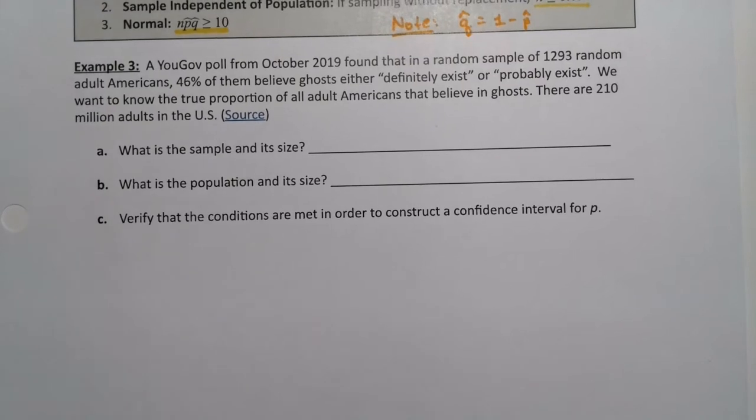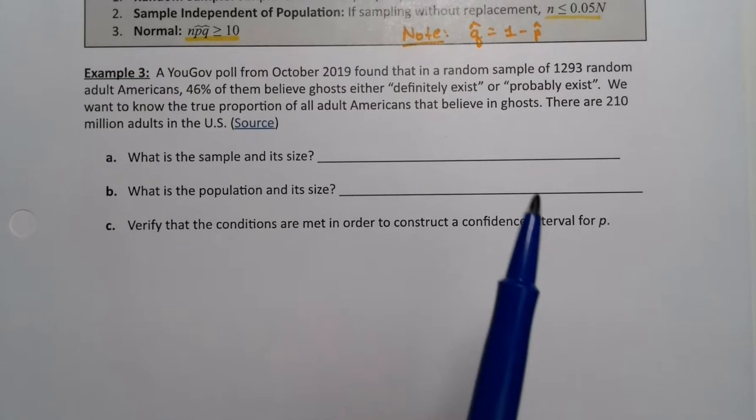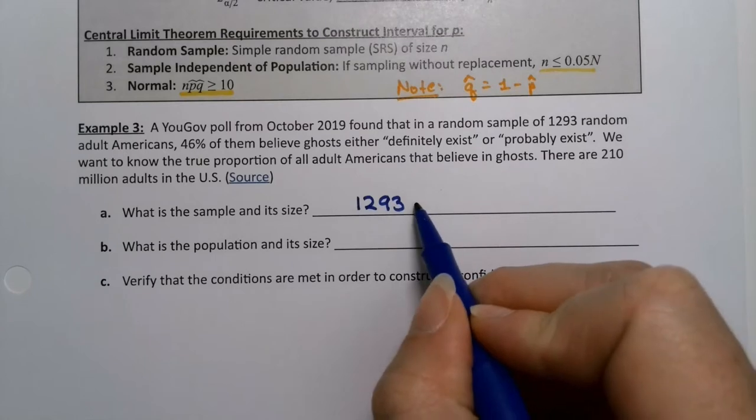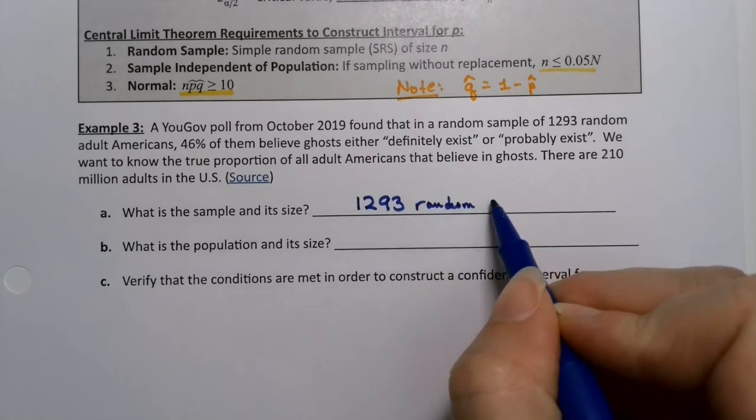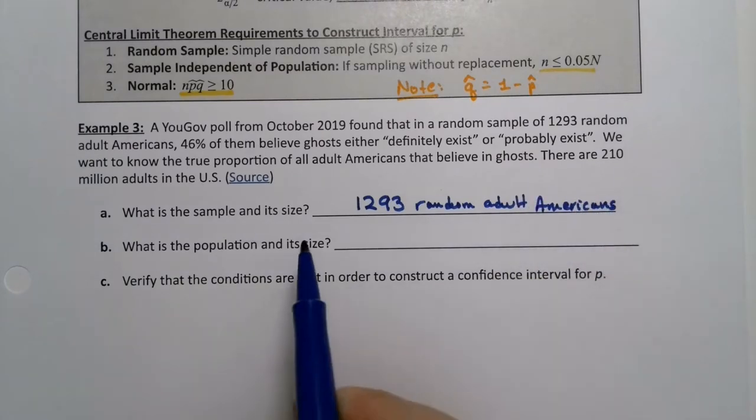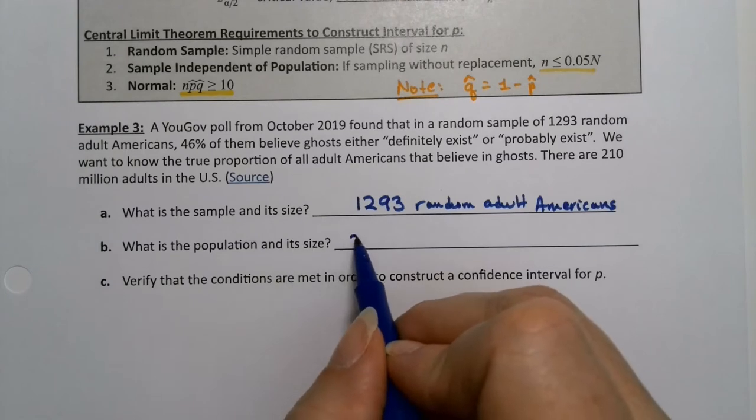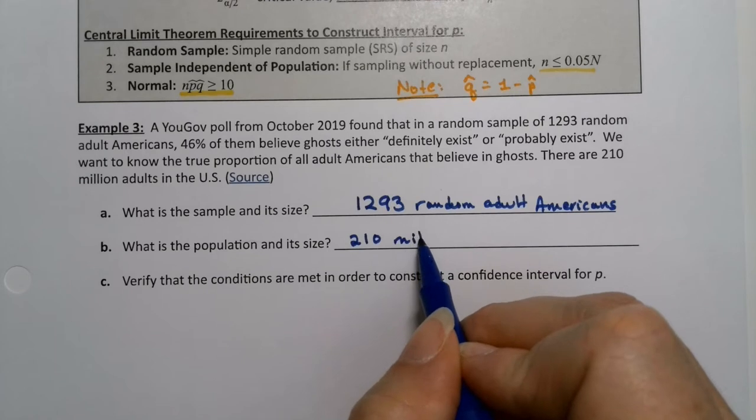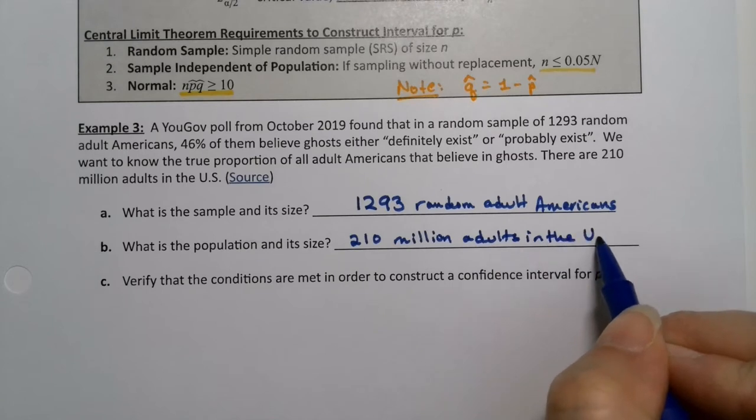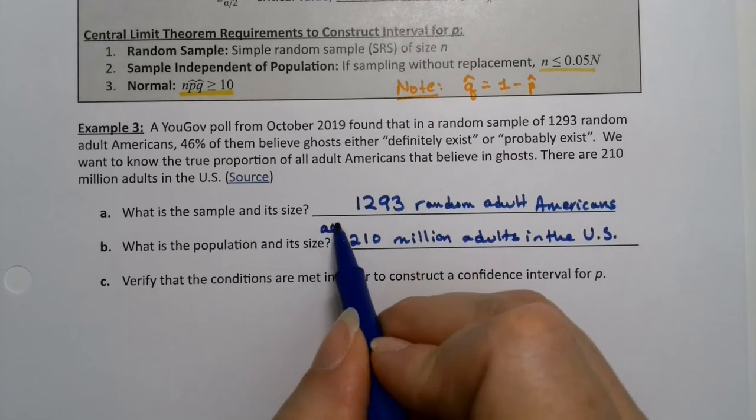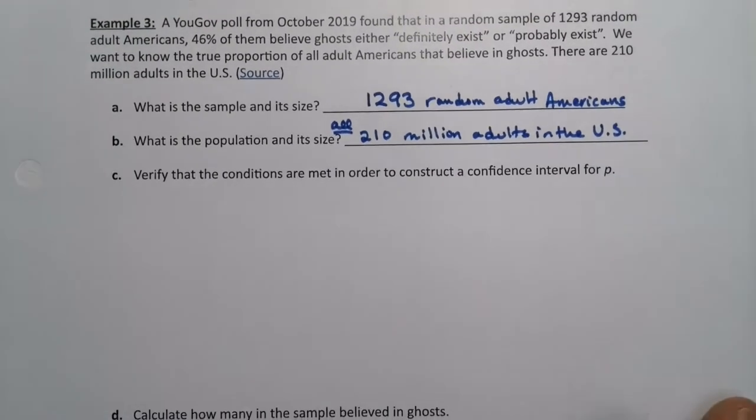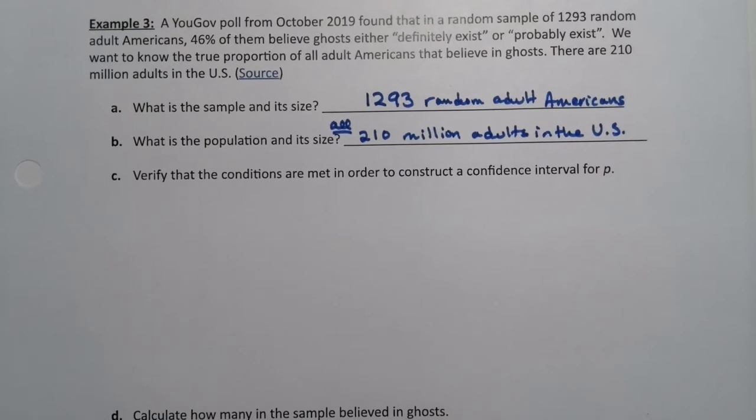What was the sample and what was its size? And what is the population and what is its size? The sample was random adult Americans and its size was 1,293. The population would be all adult Americans, so it's the 210 million adults in the US.